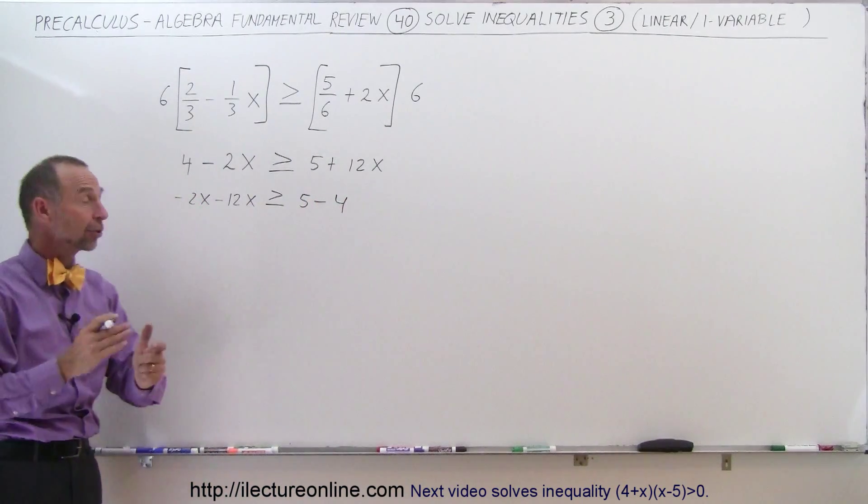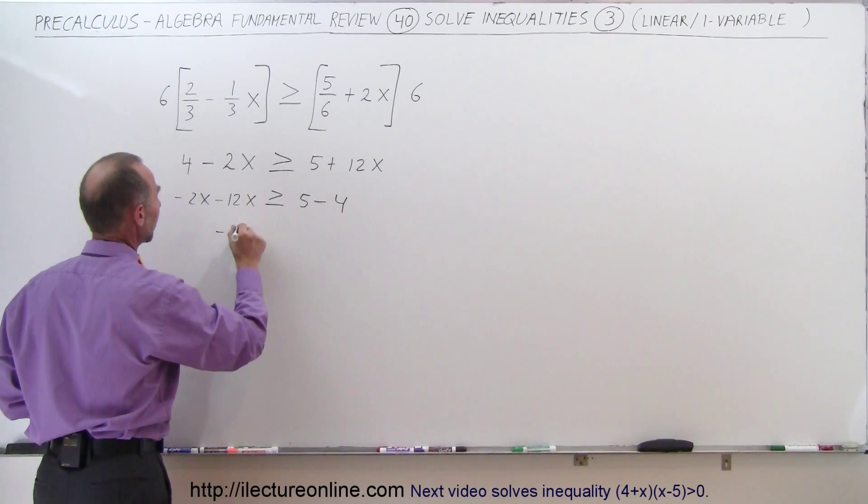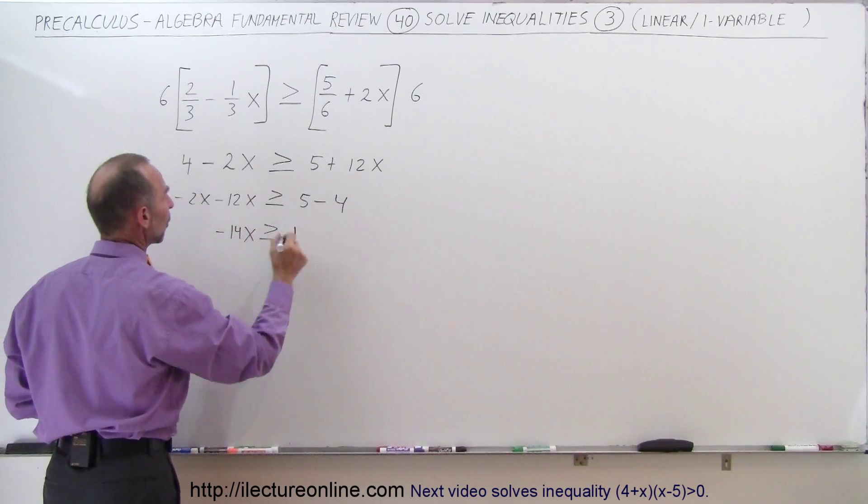Now we can combine like terms, so minus 2 minus 12 is minus 14x, is greater than or equal to 5 minus 4 is 1.